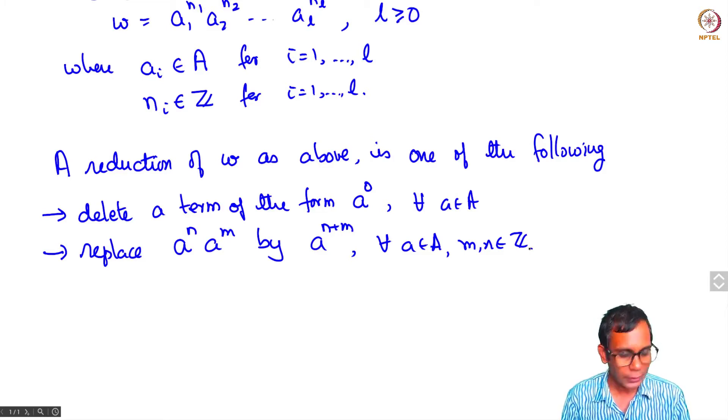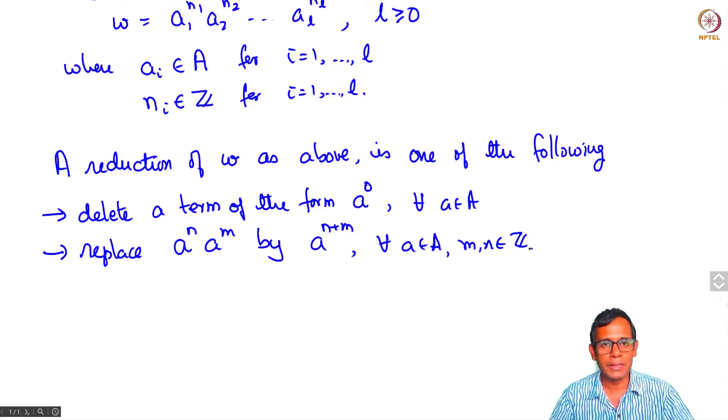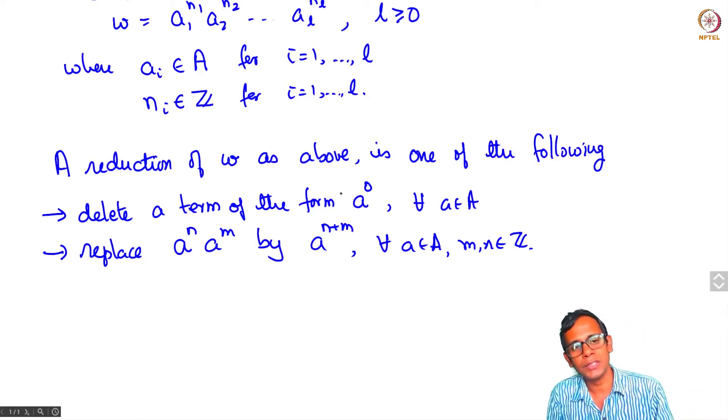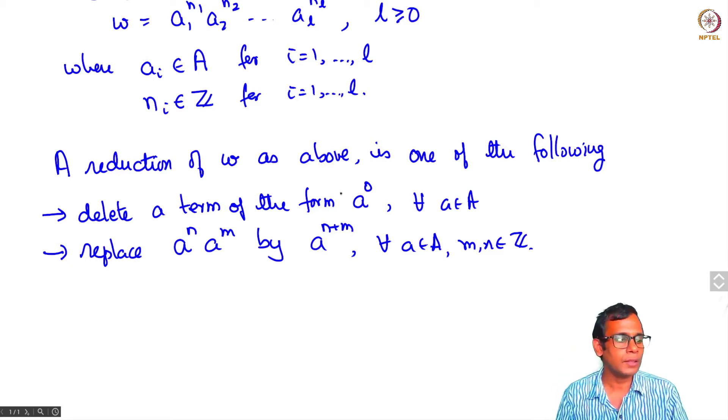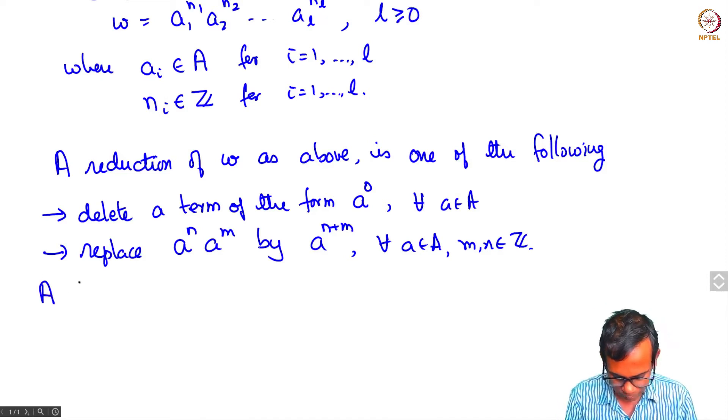So this is for all a in a, m n in Z. So basically what we are saying is if two consecutive terms in your word have the same letter then you can club them and replace the exponent by the sum of the two exponents. So these could be positive or negative but you add them up as integers.